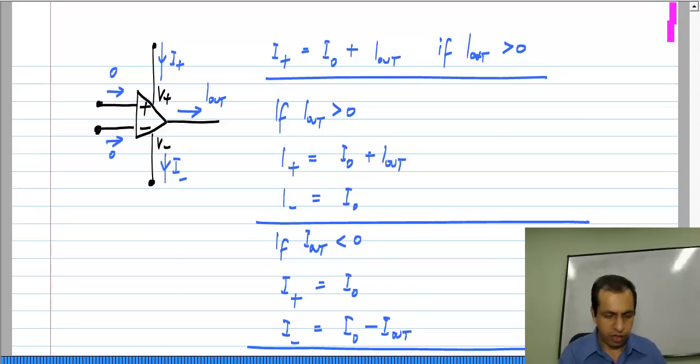And clearly if Iout is exactly equal to zero, then I plus and I minus will be the same and equal to I naught. This is a pretty simple model that we can use.